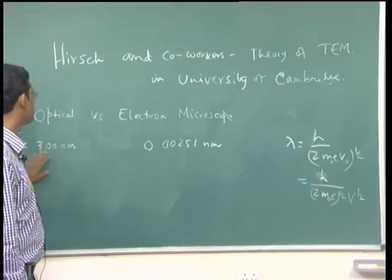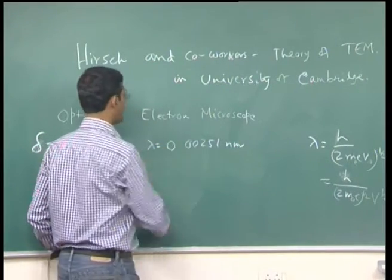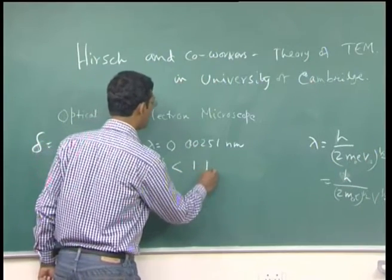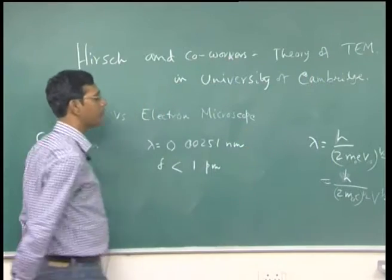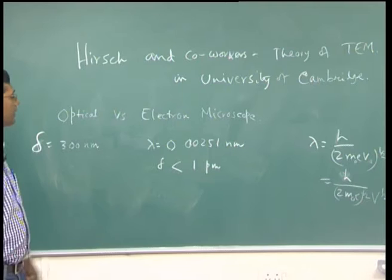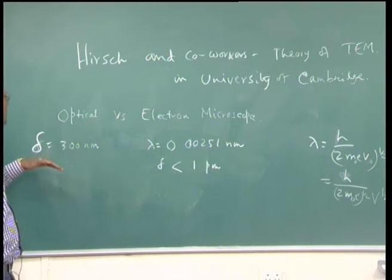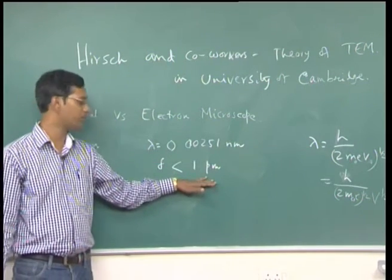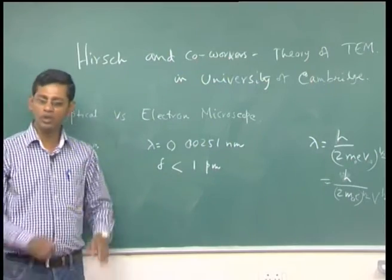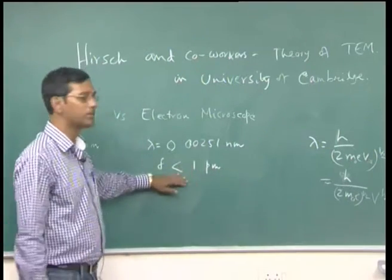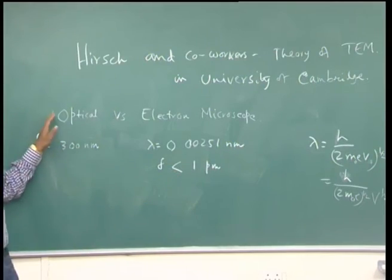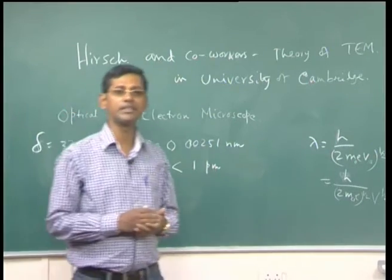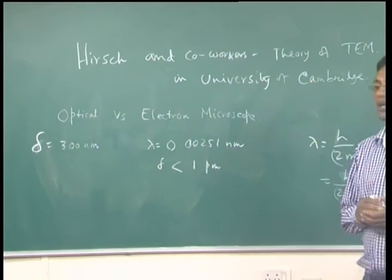So immediately you can see that if lambda in the electron microscope is that small, then the resolution δ will be less than 1 picometer according to the Rayleigh formula. One can clearly see that it is possible to reach resolution theoretically from 300 nanometers in an optical microscope to less than a picometer in an electron microscope. However, we do not normally achieve this resolution because of problems with the lenses.